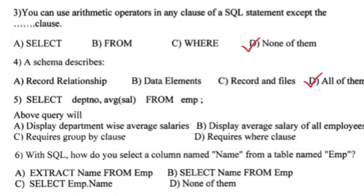Select department number, average salary from employee. The above query will — write optional C — require a GROUP BY clause.